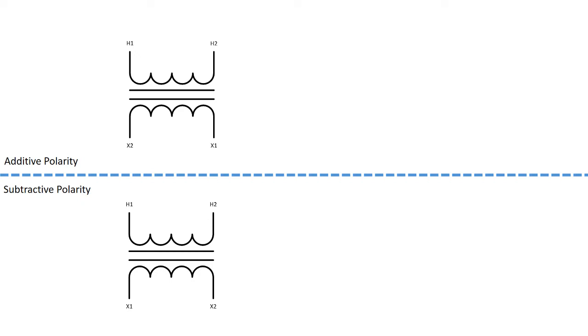The easiest way with an additive polarity transformer is to look at your H1 and X1 terminals. In an additive polarity transformer you'll notice that they're diagonally across from each other. This indicates that we have an additive connection, whereas when we look at the subtractive polarity you'll notice H1 and X1 are directly across from each other. So that's the thing to watch out for—the H1 and X1 terminals.